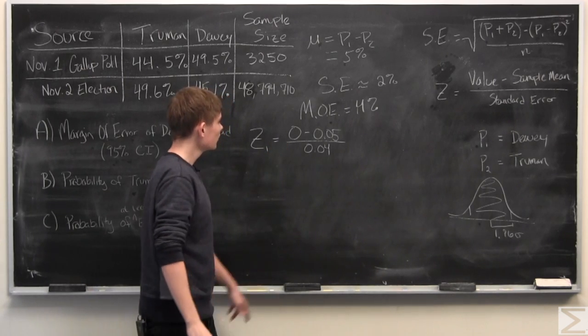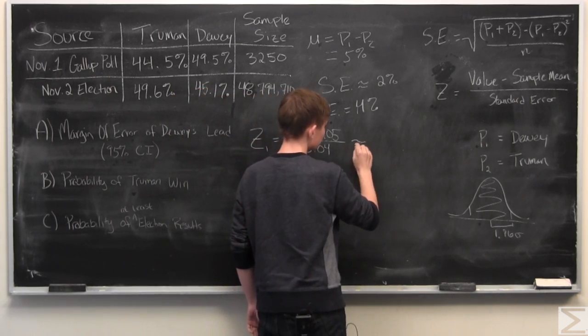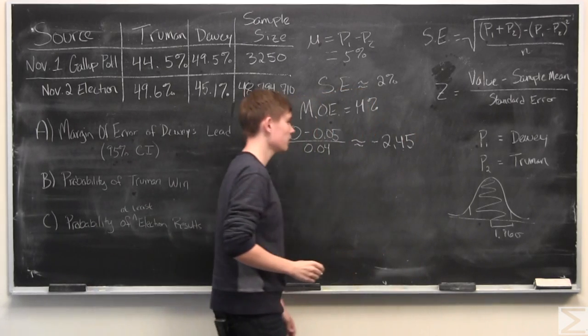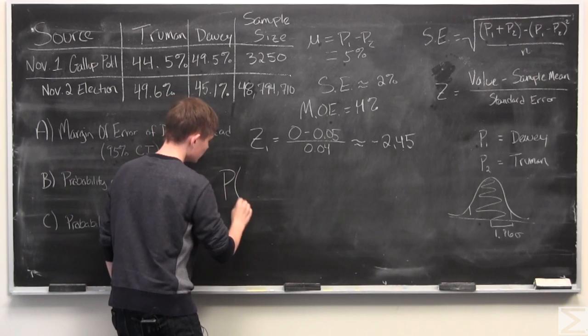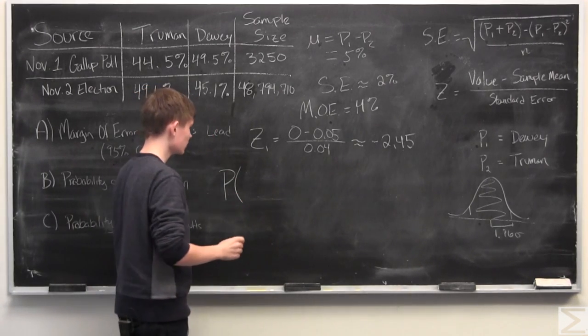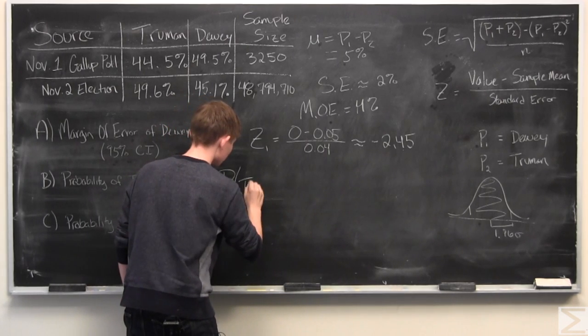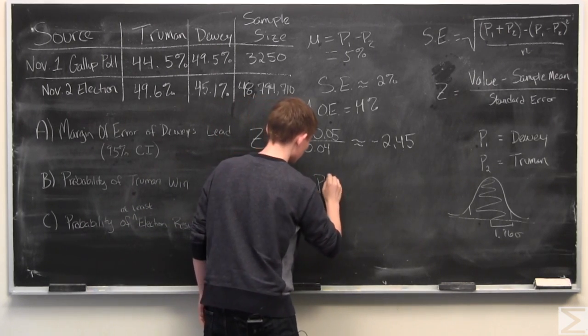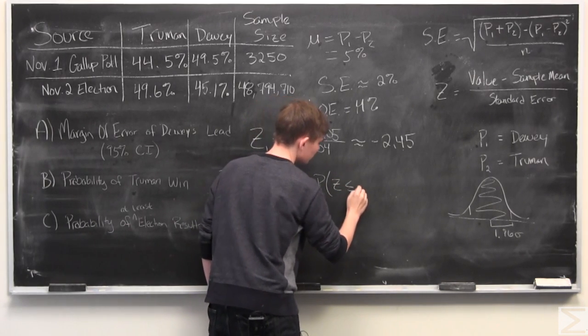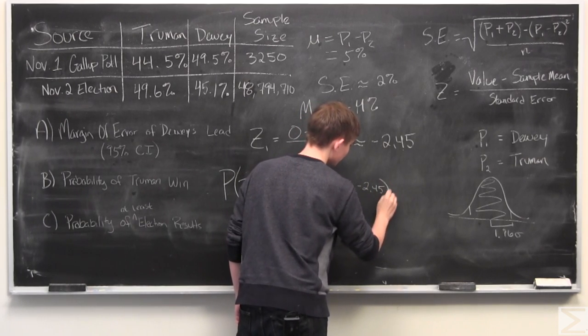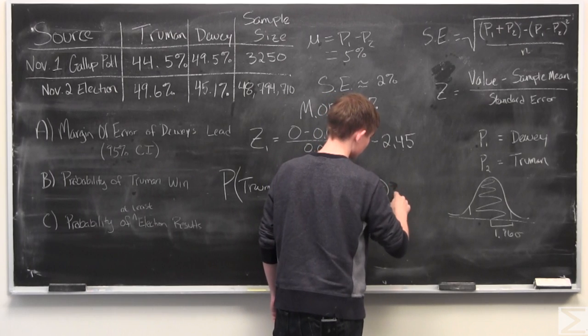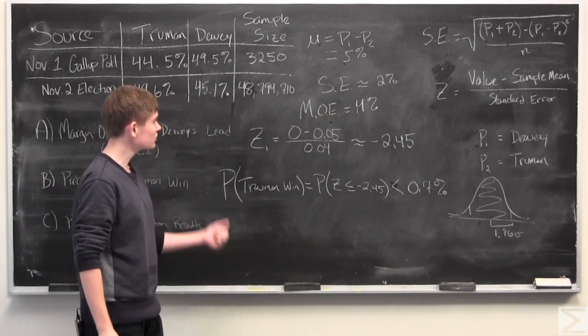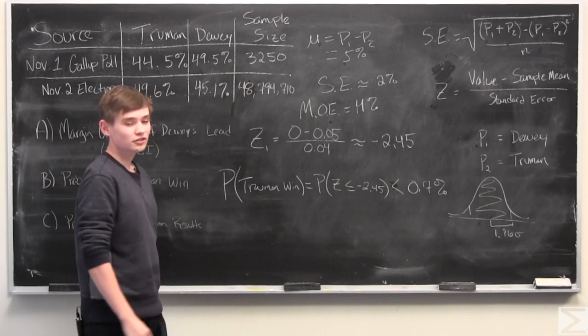So, call this z1. When we do this out, we get roughly negative 2.45. And when we use a z-score table, we find that the probability of a Truman win is equal to the probability of the z-score being less than or equal to negative 2.45, which is less than 0.7%. So based off this polling data, Truman is not looking good for this election.